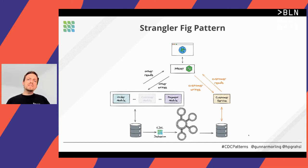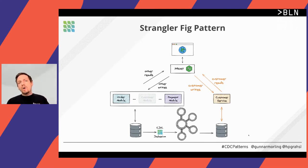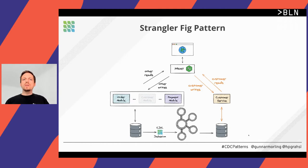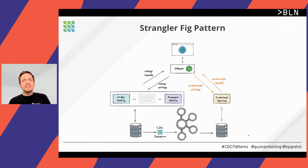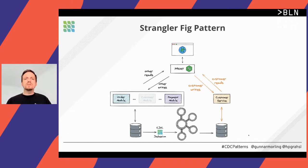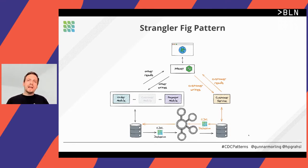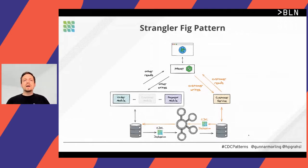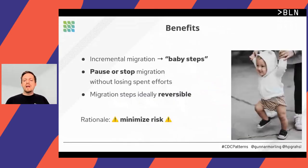In a second step, we extend the microservice to also support write workloads. Once done, we reconfigure the proxy again so our microservice serves all reads and writes relevant to customer service. This means we can shut down that functionality in the monolith. Of course, other modules in the monolith might need to be aware of changes happening in this new microservice, so we configure another CDC connector to propagate those changes back into the monolith via Kafka.